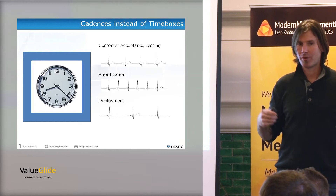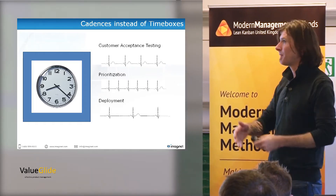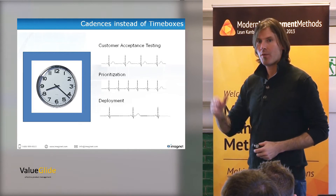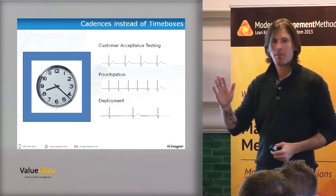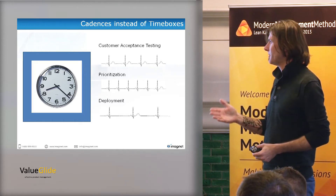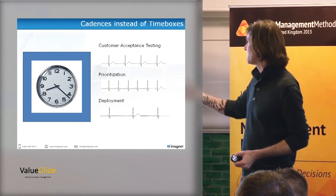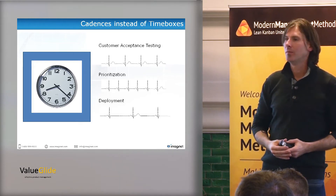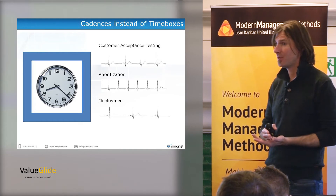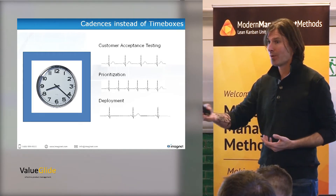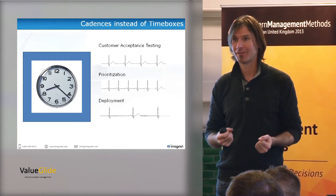Where Kanban gets the iterationless moniker is that it tends to be able to split cadences across activities. I want to do customer acceptance every two weeks, prioritization every week — and they'll meet up at some point. But cadences are still very important. That repeatability is important to human beings, and part of the reason Kanban exists is because we like heartbeats.